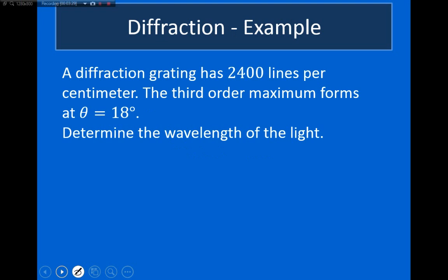So, let's go ahead and just look at another example. The example says we have a diffraction grating that has 2400 slits per centimeter. The third order maximum occurs at θ equals 18 degrees, and we're asked to find the wavelength of the light.